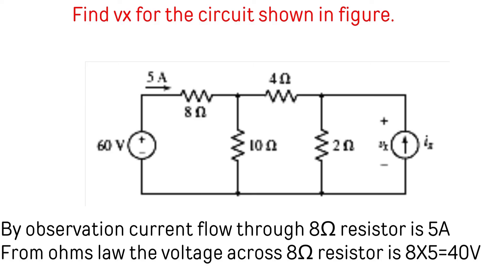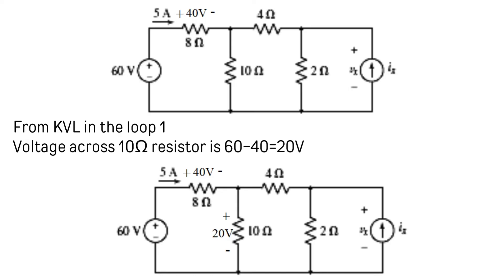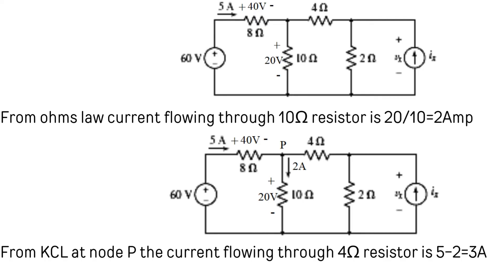Find Vx for the circuit shown in the figure. By observation, the current through the 8 ohm resistor is 5 amperes, so the voltage across it is 8 × 5 = 40 volts. From KVL in loop 1, the voltage across the 10 ohm resistor is 60 − 40 = 20 volts. KVL states that the algebraic sum of voltages in a closed loop is zero.